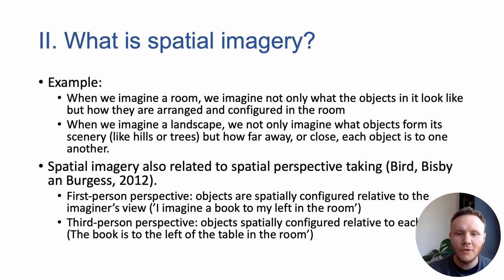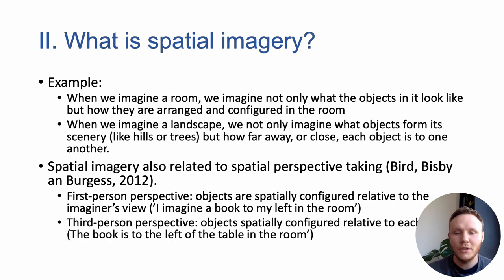Through a first person perspective, the spatial relations are defined by what's relative to the imaginer's view — for example, I imagine the book on my left in the room. And through a third person perspective, spatial relations are defined by object to object relations, like the book is to the left of the table in the room.